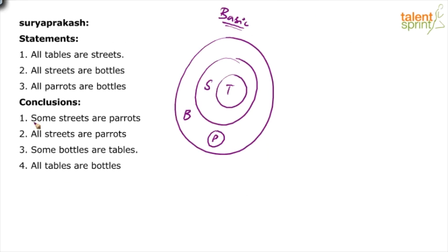Now look at the conclusions. First: Some streets are parrots. When you look at the basic diagram, there is no overlapping between streets and parrots. So some streets are parrots is wrong. Streets and parrots do not overlap at all, so some streets are parrots — wrong.